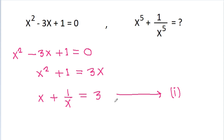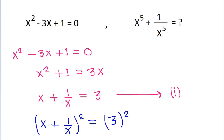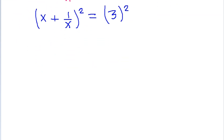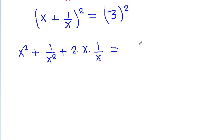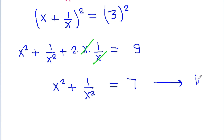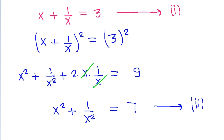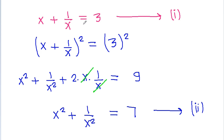Now we have x plus 1 by x is equal to 3, and if we square both sides, then we can get x squared plus 1 by x squared plus 2 times x times 1 by x is equal to 9. The x and 1 by x cancel, and we get x squared plus 1 by x squared is equal to 9 minus 2, which is 7. Let's call this Equation 2.